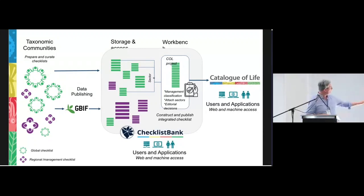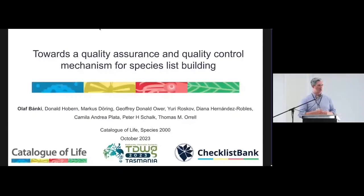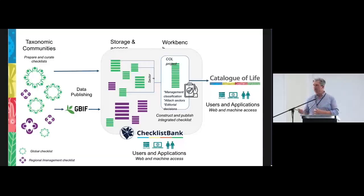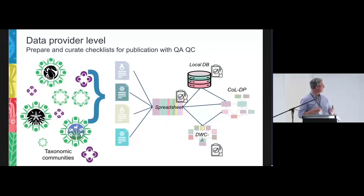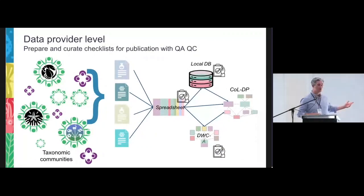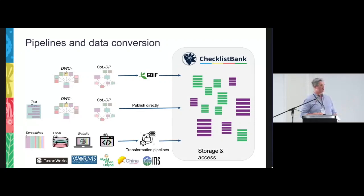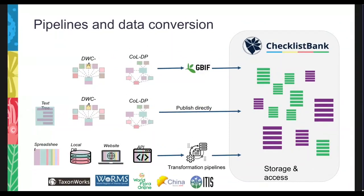If you talk about the level of publishing and converting data into the right data standards into ChecklistBank, we have several automated pipelines established. Initiatives like ITIS, WoRMS, and TaxonWorks have their own data quality assurance processes in place. There are automated pipelines coming through ITIS, TaxonWorks, and WoRMS, for example, but there's also the possibility to publish data directly from a data standard to ChecklistBank.